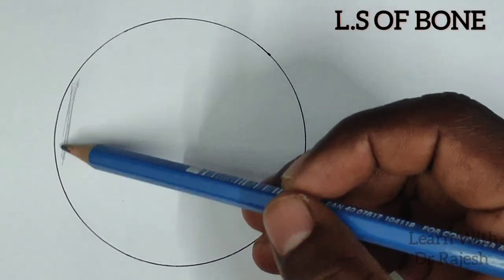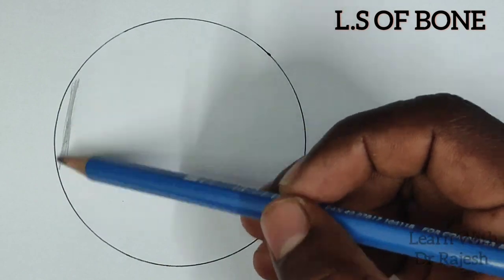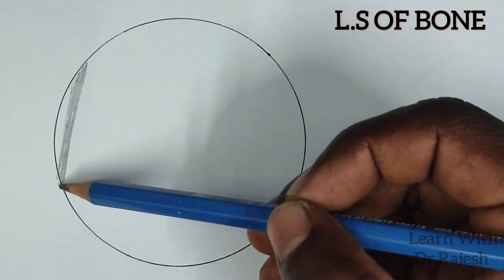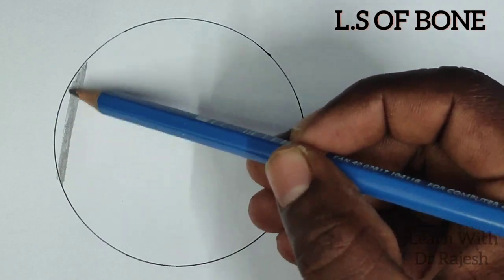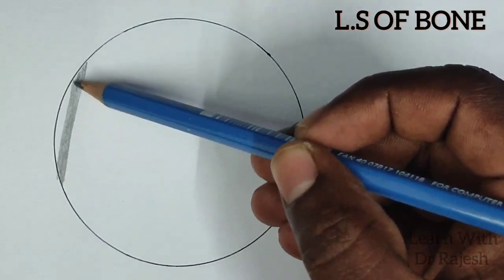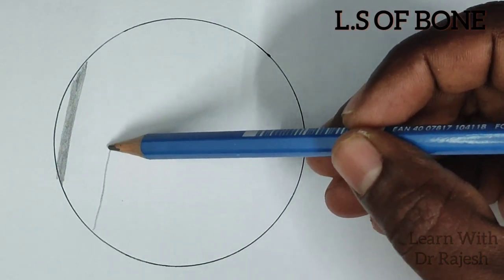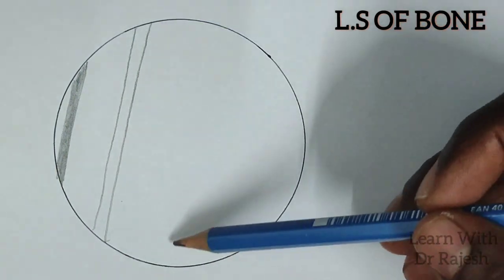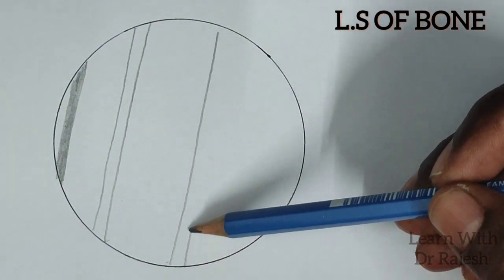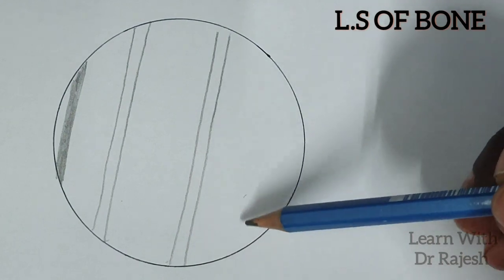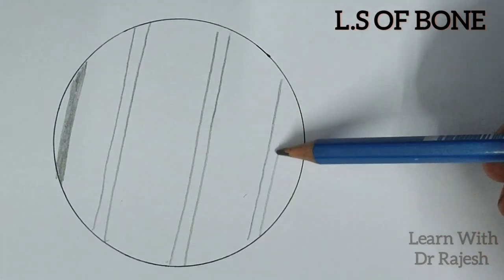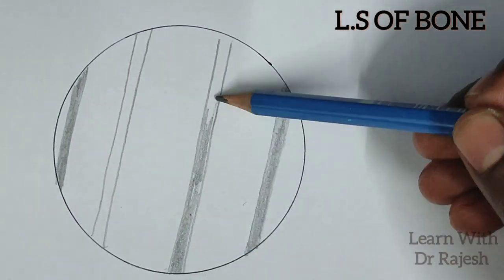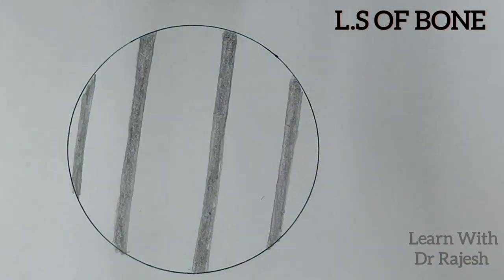The next slide we are going to draw is the longitudinal section of bone. Here also, we first draw longitudinal shaded lines representing the Haversian canal. These Haversian canals are arranged in a parallel fashion, so we draw multiple parallel Haversian canals. As already discussed, these Haversian canals transmit blood vessels and lymphatics.